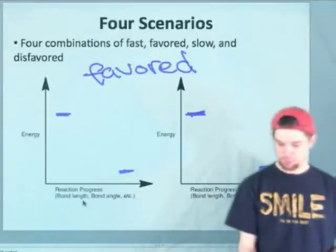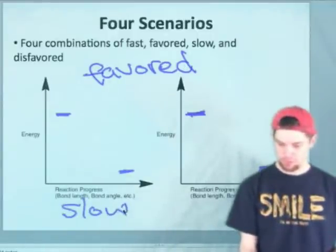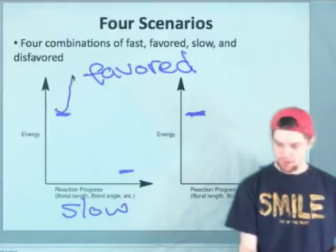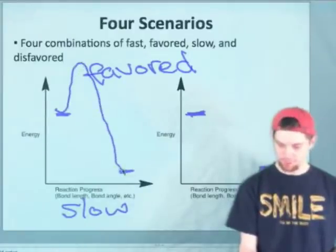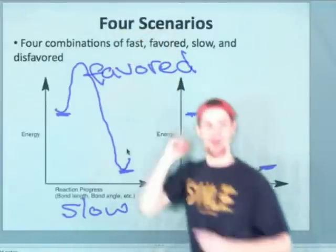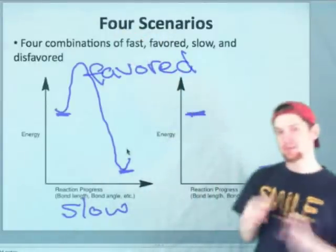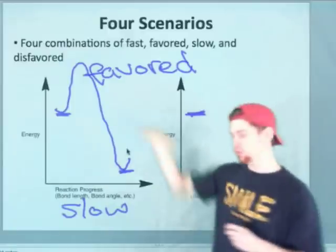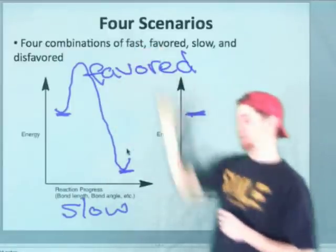Now, for a favored but slow reaction, the kinetic barrier is very high. So we might see something like this, where the kinetic barrier is way up high. And so the starting materials, even though the reaction is favored, don't necessarily want to get over that hump.